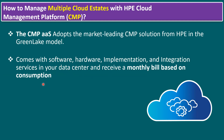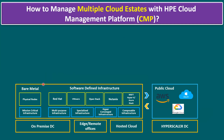Most customer environments can have an on-premises data center, edge or remote offices, a hosted cloud, and integration with hyperscaler data centers — that means private cloud, AWS, Azure, or Google Cloud — and also other third-party public clouds like Oracle, IBM, and Alibaba.